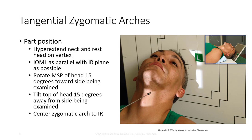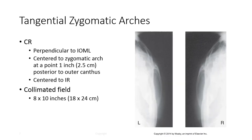Next, tilt the top of the head 15 degrees away from the side being examined. This motion frees the base of the arch from superimposition of other cranial bones. Center the zygomatic arch to the IR. Place the CR perpendicular to the IOML and center to the zygomatic arch at a point 1 inch posterior to the outer canthus of the affected side. Center to the IR with a collimated field of 8 by 10 inches. This view should be performed bilaterally with opposing rotation and tilt for each side.